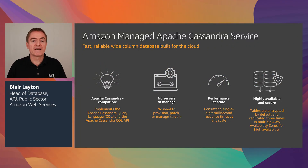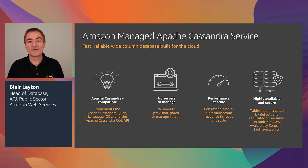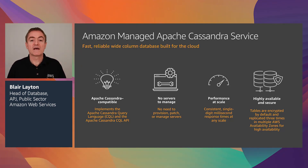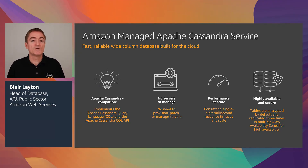The last one we're going to talk about today is Amazon Managed Apache Cassandra Service. If you love open-source technologies and your Cassandra database and don't want to use other AWS databases, then by all means use this service. It supports the Cassandra Query Language. Similar to Amazon DocumentDB, you can simply point your existing applications at it — we've implemented the APIs and will give you the responses you expect. This allows you to scale your Cassandra databases in a serverless model, making managing Cassandra in AWS very easy.